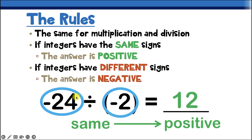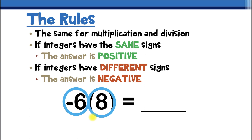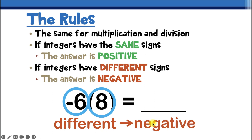This one might look a little different, but it just means negative 6 times 8. Our first number is negative and our second number is positive, so the signs are different. Because the signs are different, our answer is going to be negative. 6 times 8 is 48, but since the signs are different, the answer is negative 48.